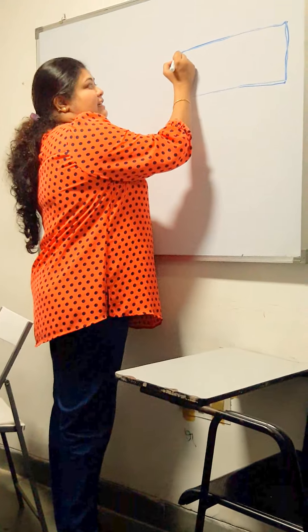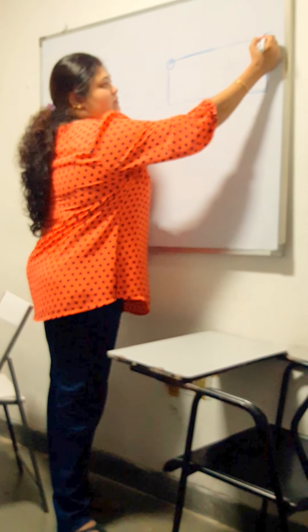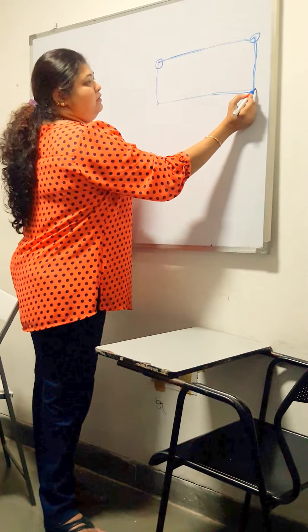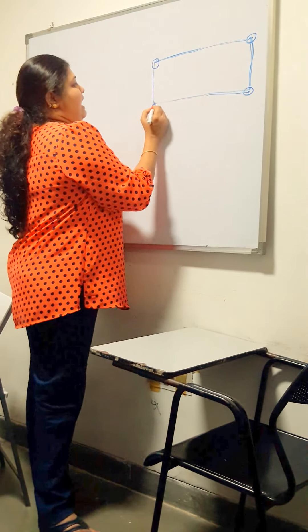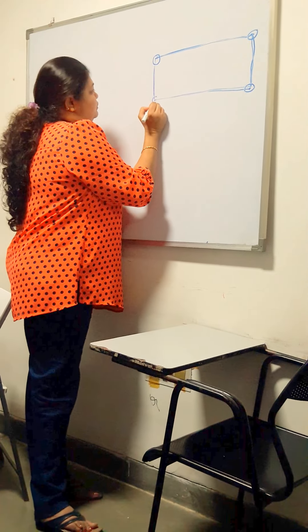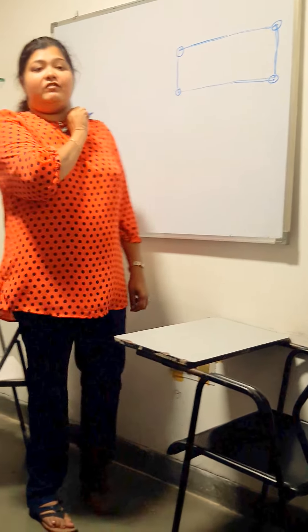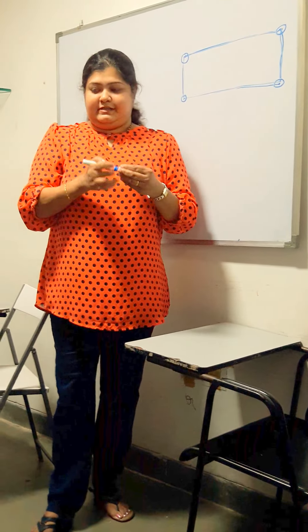Rectangle has got four corners — one, two, three and four. So how many corners does a rectangle have? Four corners. Four corners.